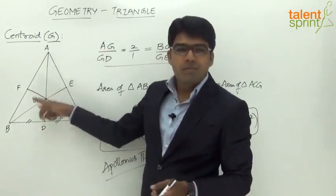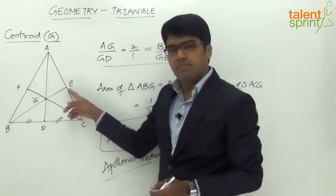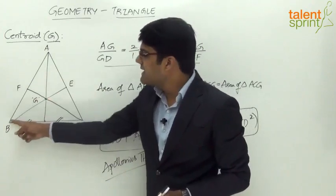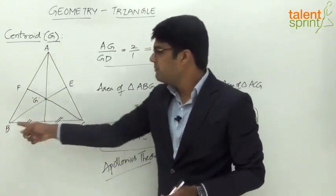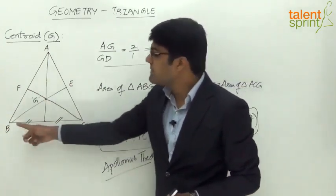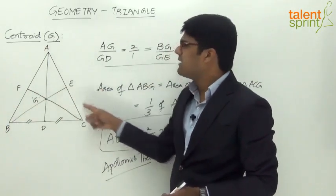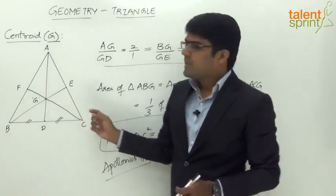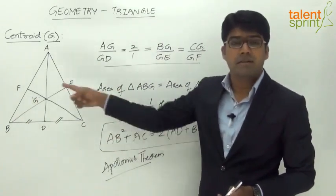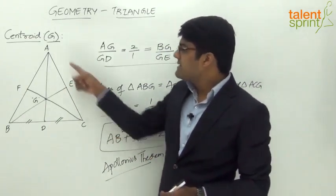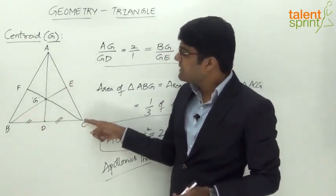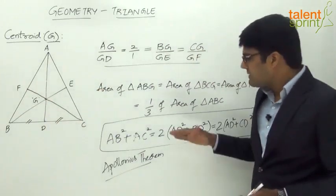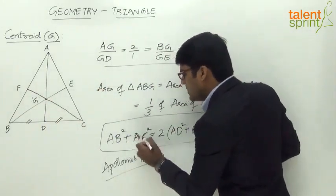This applies to all medians. For median BE in triangle ABC: BA² + BC² = 2(BE² + AE²). For the third median CF: CA² + CB² = 2(CF² + AF²), or equivalently 2(CF² + BF²). These are important conclusions to remember so that if a question is asked on this theorem, it will be easy to arrive at the final answer.